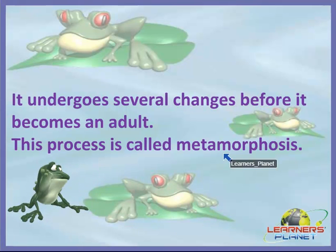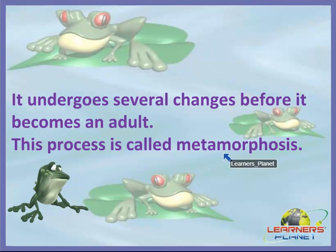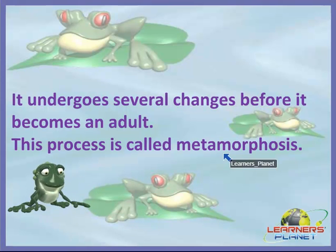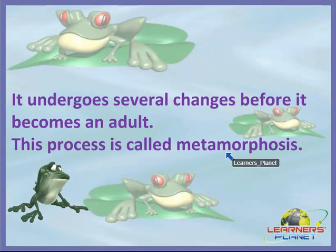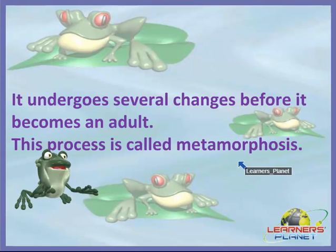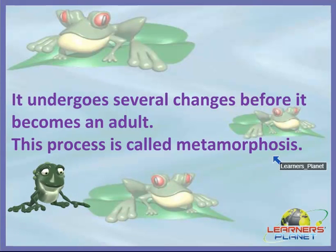Let's revise. A frog lays eggs in large clusters called spawns. A tadpole hatches out of this egg, which looks very different from the adult frog. From the laying of the egg to forming an adult frog, it undergoes several changes. This process of a frog's egg undergoing several changes before becoming an adult is called metamorphosis.